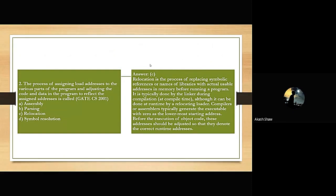Gate question 2: The process of assigning load addresses to various parts of the program and adjusting the code and data in the program to reflect the assigned addresses is called: A) assembly, B) parsing, C) relocation, D) symbol resolution.